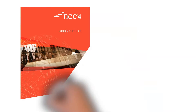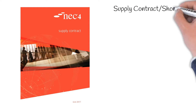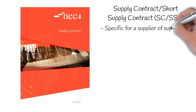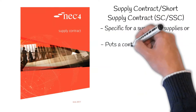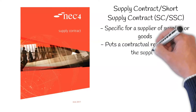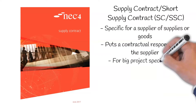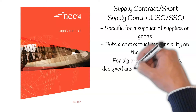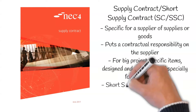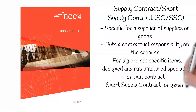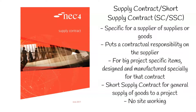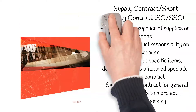Supply Contract, or Short Supply Contract, SC or SSC. This contract is specific for a supplier of supplies or goods. The purpose of this contract is to put contractual responsibility onto the supplier during a construction project life cycle. The supply contract is for big project-specific items which are designed and manufactured specifically for the contract. The short supply contract is for more general supplies of goods to a project. Neither of these contracts cover site working.